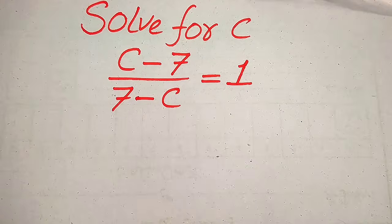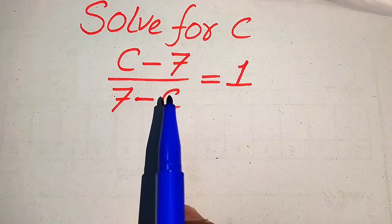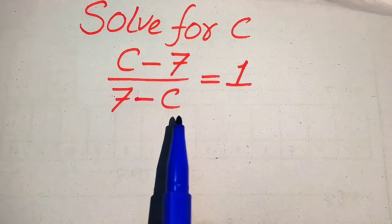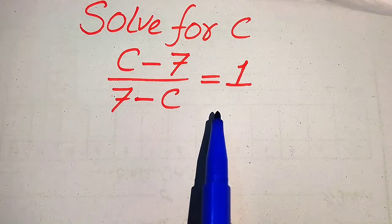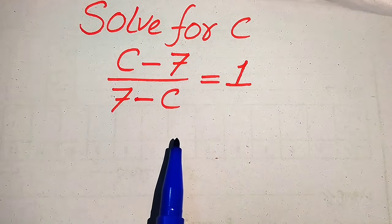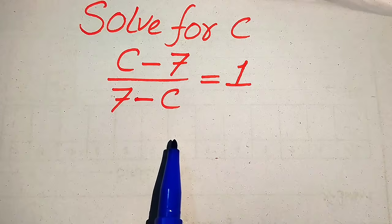Hello everyone. How to solve this problem for the values of c, if we have c minus 7 divided by 7 minus c is equals to 1, and we solve this problem for all the values of c. First we find all the roots of this equation, and at the last we will verify which of the roots are solutions of the given equation and which of the roots are extraneous roots.